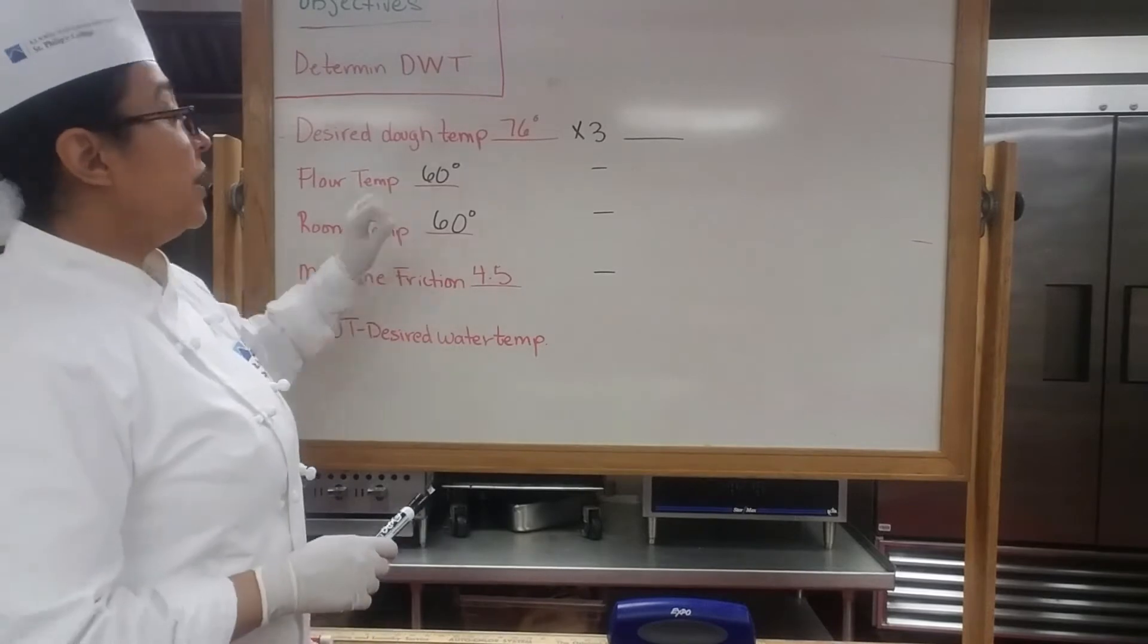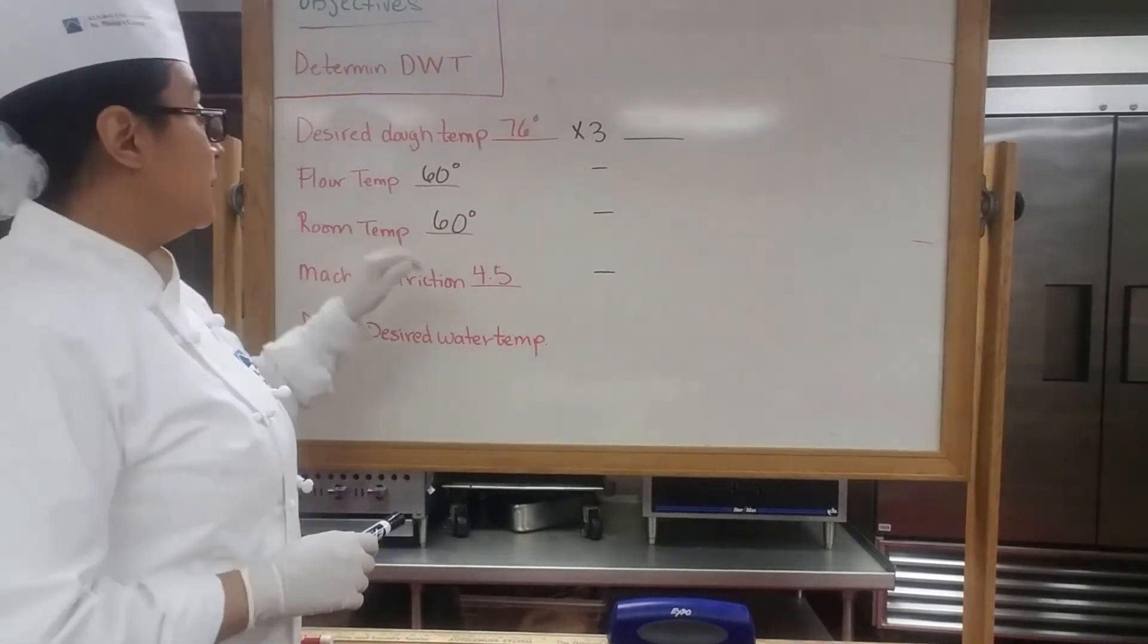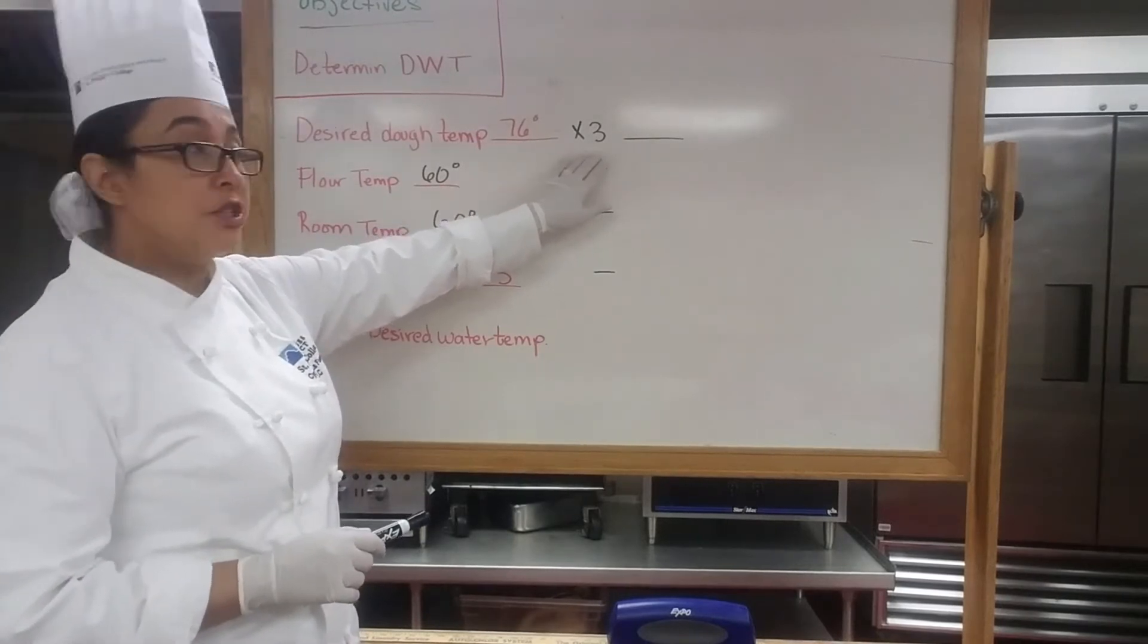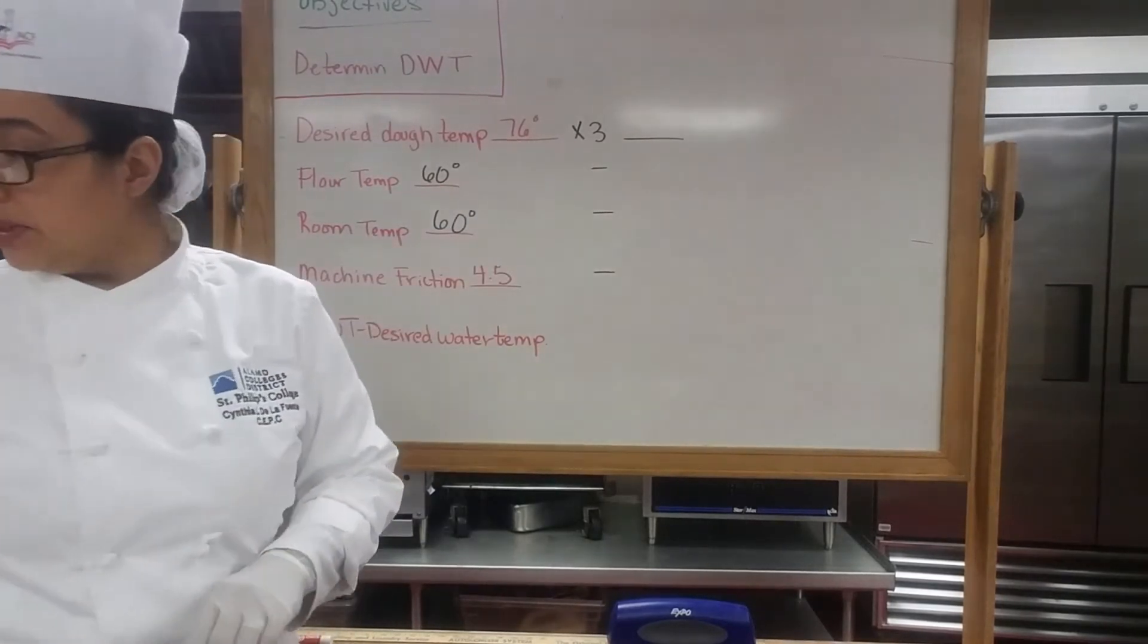The way our equation is going to be: we're going to take our desired temperature and multiply it times the factor which is three. That's going to give us a number: 228.